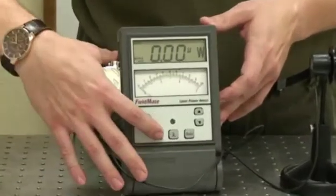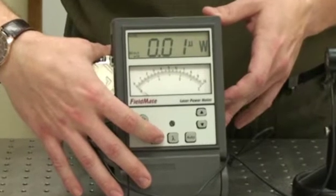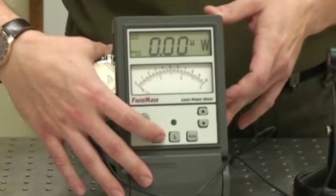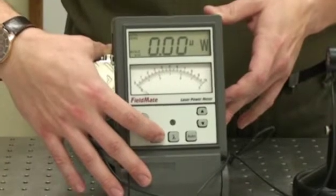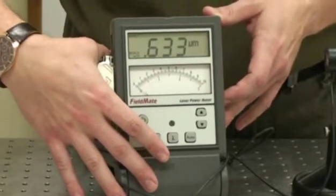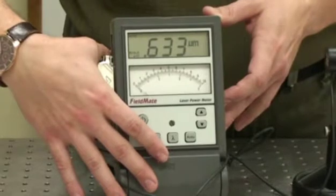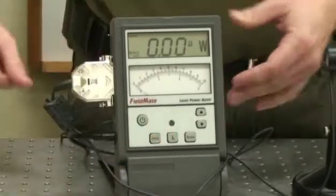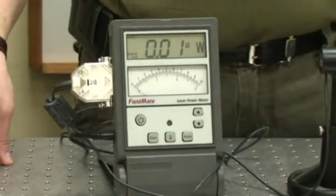And when it comes up, I'm going to hit the zero key to make sure we are zeroed. You'll see it start to zero. And we'll check our wavelength which should read at 633 nanometers. Now we should be ready to receive laser light.